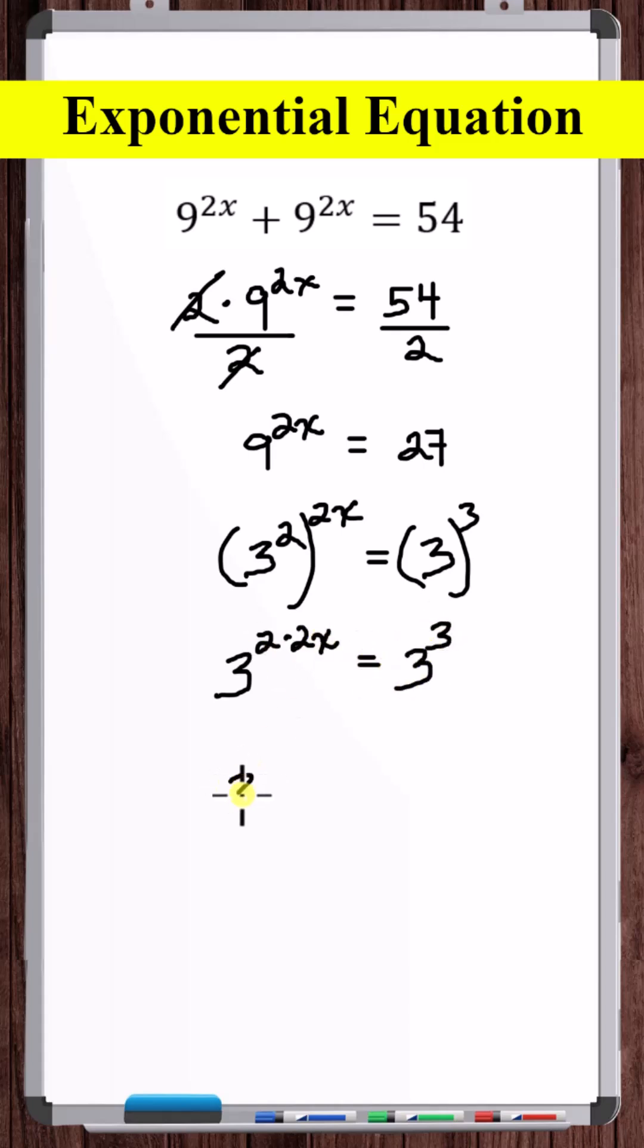So simplifying this, we get 3 to the 4x equals 3 to the 3. Now since the bases on each side of the equation are the same, we can just set the exponents equal to each other.